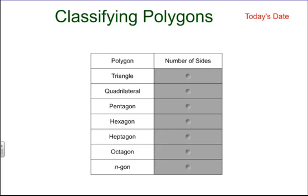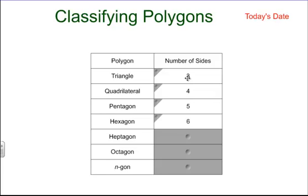When we classify polygons, let's jot down this chart — 'Polygon' in the top left, 'Number of Sides' in the top right — just as a quick reference guide. A triangle has 3 sides, a quadrilateral has 4, a pentagon has 5, a hexagon has 6, a heptagon has 7, an octagon has 8. And for an n-gon, meaning we don't know how many sides, we have n sides. Jot down that chart real quick.